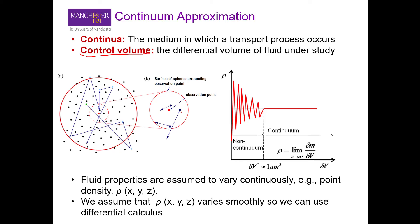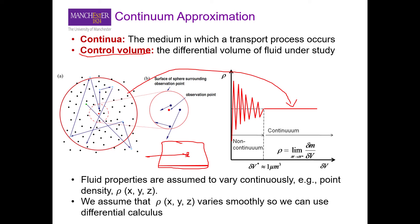If you look at a very small control volume and try to define a property such as density — that is mass per unit volume — you will get a very uncertain value because molecules can go in and out of this control volume. But if you define a much larger control volume with many more molecules, you will get a much more stable value of density. The continuum assumption means that properties of one point or one control volume in a fluid are representative of the whole bulk of that fluid — each point will have the same properties.